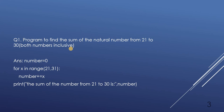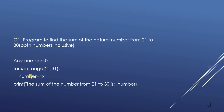Question number 1 is: program to find the sum of natural numbers from 21 to 30, both numbers inclusive. First of all we have taken a variable named 'number' and assigned it the value zero. Then we have a for loop: for x in range(21, 31).